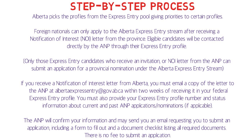This is a paper-based application. After all the steps are done, you must physically send your documents along with the required forms and document checklist to Alberta in an envelope. This is not an online process — you cannot upload documents online — so it will take time. Please ensure you do not provide any false information to Alberta, because only after submitting all documents will they send you a PNP nomination letter, which grants you 600 points and virtually guarantees an ITA in the very next draw.